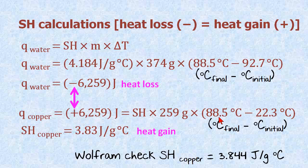The final temperature was 88.5. And the initial temperature was much lower. It was right around room temperature of 22.3 degrees C. And when we work it through, we get the specific heat of copper is approximately equal to 3.83 joules per gram degree C. And it's a heat gain. If we go over to Wolfram, we do a quick check. And we get Wolfram saying that copper is 3.844 joules per gram degree C.